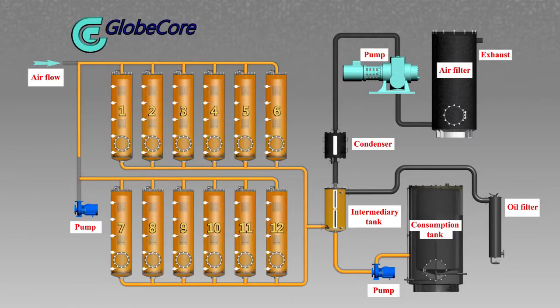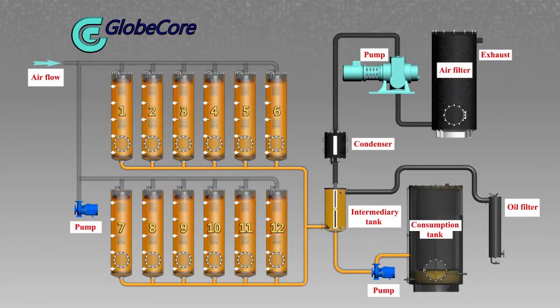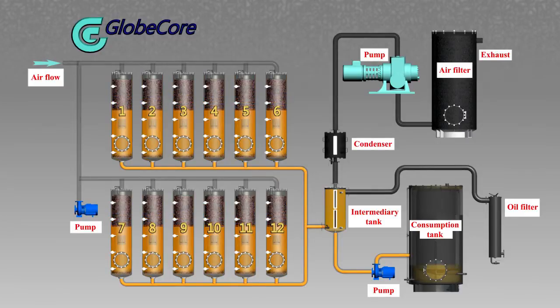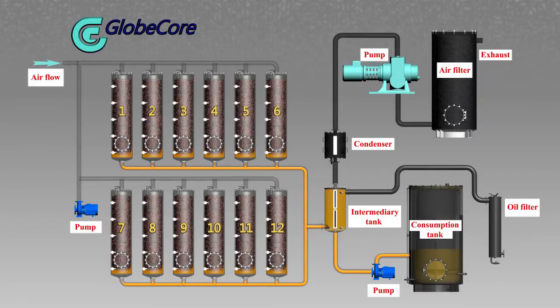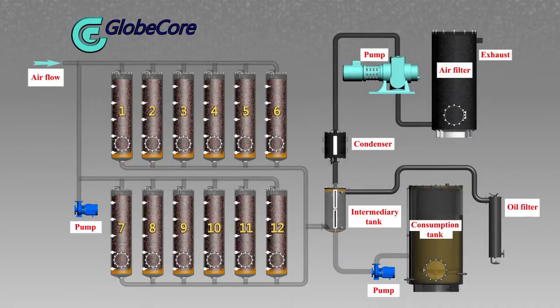Reactivation process runs as follows. The output pump drains the oil from sorbent columns and puts it into the buffer tank. After the columns are completely drained, the vacuum pump starts. The vacuum pump creates air flow for the columns. Then the sorbent surface heater switches on. At this time, sorbent reactivation starts and absorbed oil decomposition products are extracted.